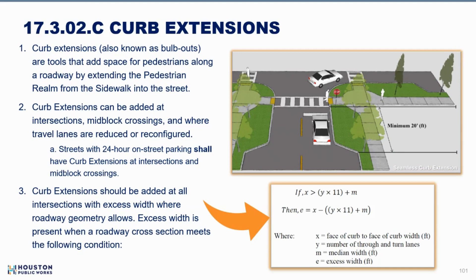Curb extensions — also known as bulb-outs — are another standard discussed. These are most useful where dedicated on-street parking exists and where parking close to intersections is already legally prohibited. The idea is simply to push out the curbs so people can't park there, using a provided formula to standardize placement. This formalizes legal street use and provides a much shorter crossing distance for pedestrians, which is very beneficial to pedestrian travel.